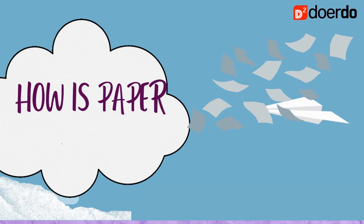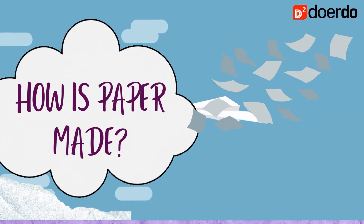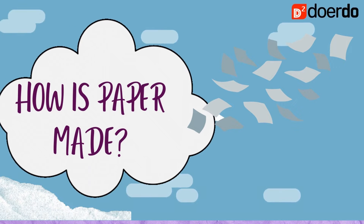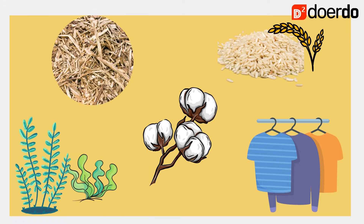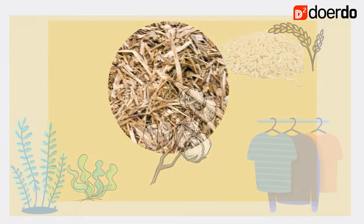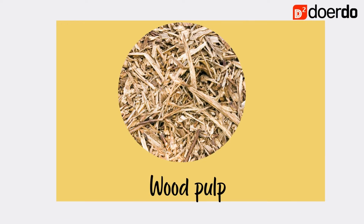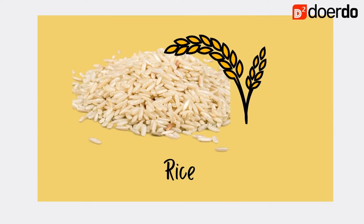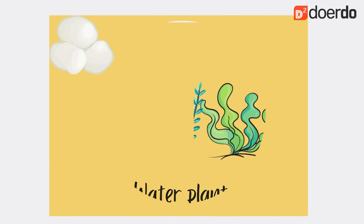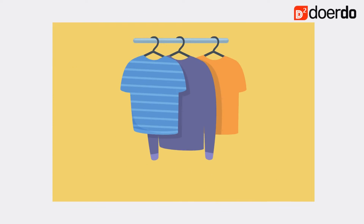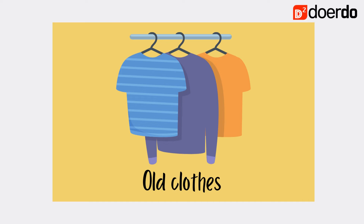Do you know how paper is made? Let us take a look. Paper has been made from a wide range of materials over the centuries, including wood pulp, rice, water plants, cotton, and even old clothes.